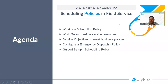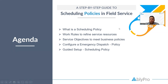We're going to talk about what is a scheduling policy within field service. We'll talk about the various work rules that we have and how they define a scheduling policy. Then we'll talk about service objectives that meet your particular business needs and policies. And then we'll give an example of configuring an emergency dispatch policy. We'll also look at another way of viewing and configuring scheduling policies within the guided setup.